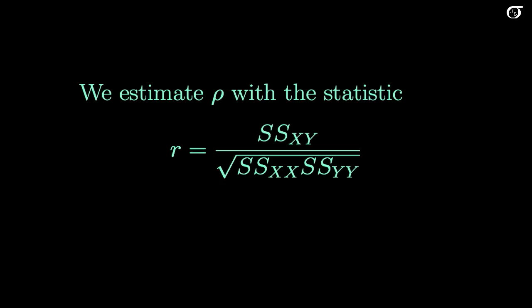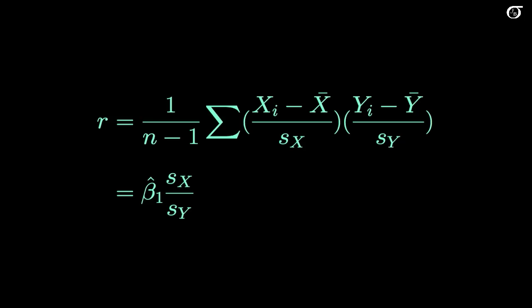Now this formula here isn't exactly all that super intuitive, and we have different ways of expressing this. Sx is the standard deviation of X, Sy is the standard deviation of Y. You might recognize these as the product of the Z scores. Another way of writing it is our sample slope times the ratio of the standard deviations.